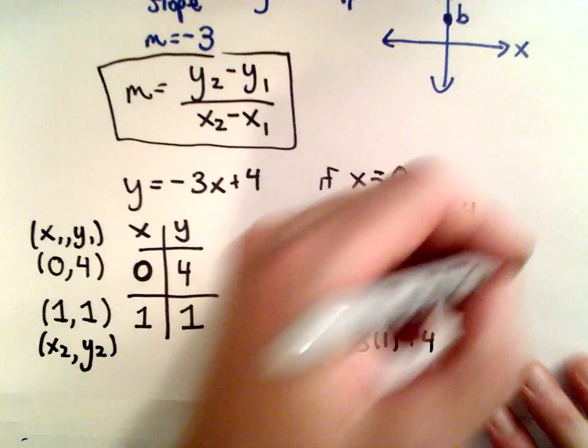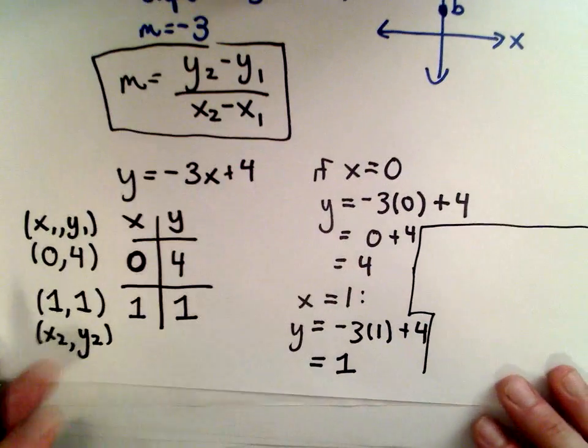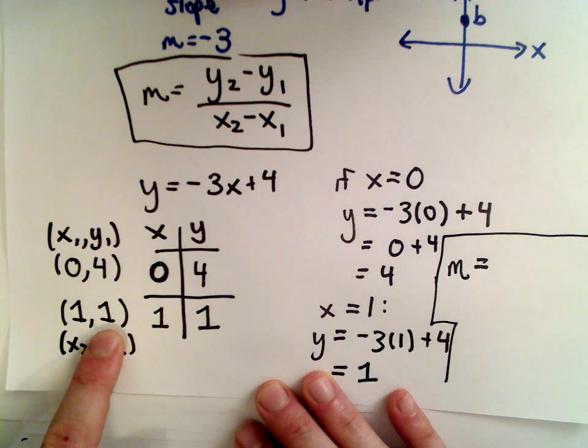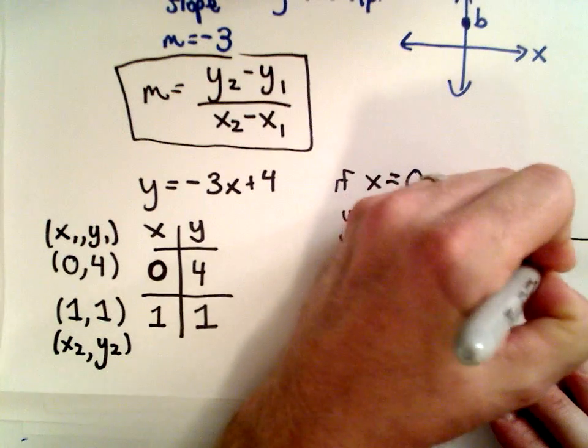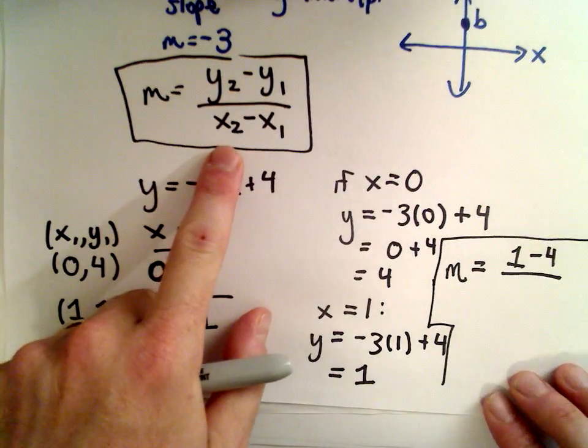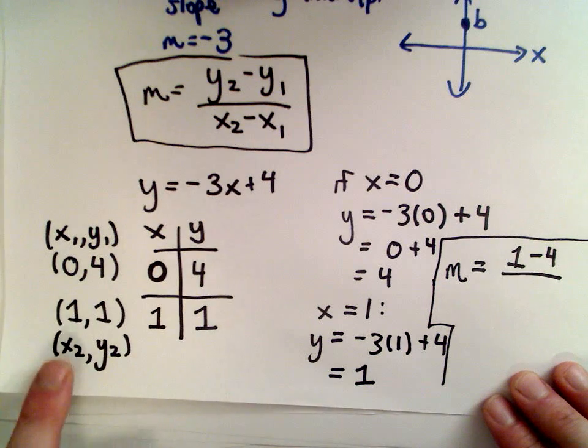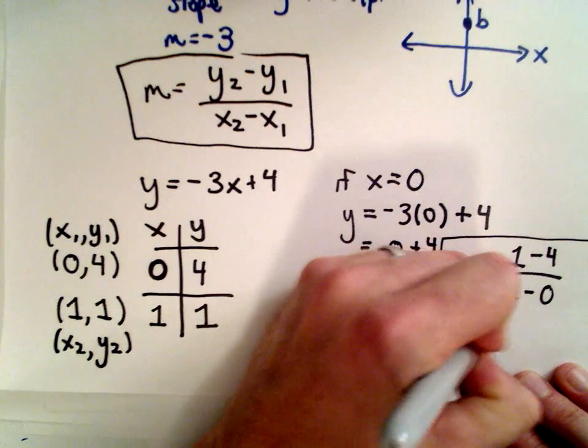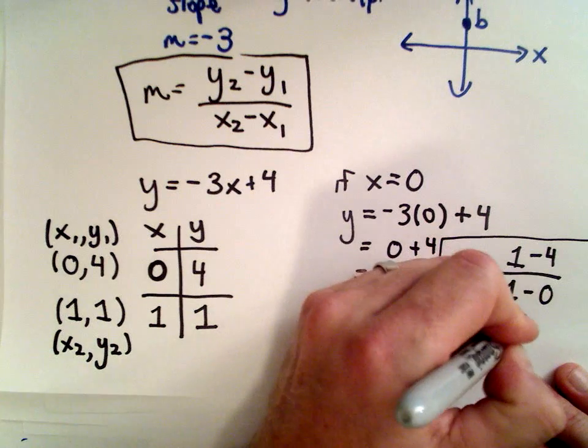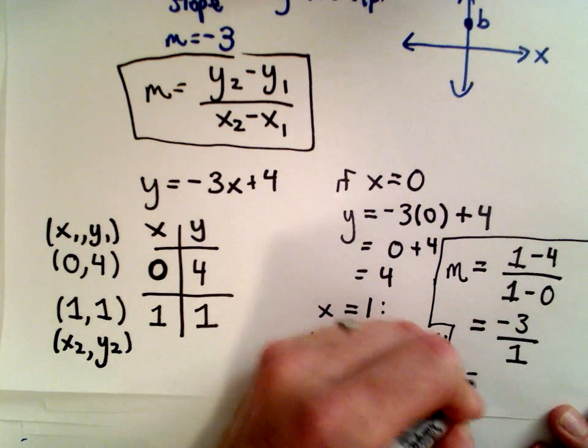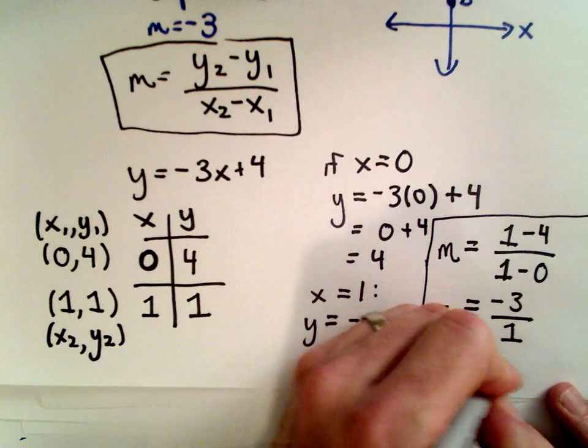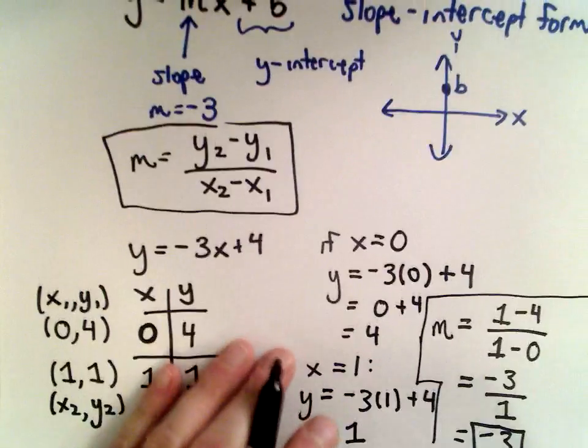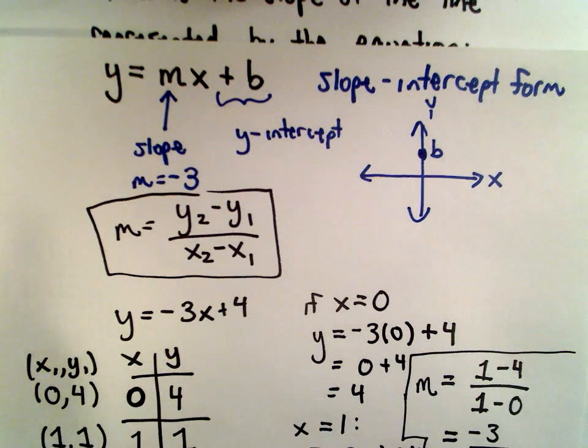So the slope, it's going to be the change in y. So I'm going to do y2 minus y1. Well, that's going to be 1 minus 4. And then in the denominator, we have x2 minus x1, which is 1 minus 0. Well, in the numerator, 1 minus 4, that's negative 3. In the denominator, 1 minus 0, that's just positive 1. Negative 3 divided by positive 1 is just going to leave us with negative 3. And that's going to be our slope.